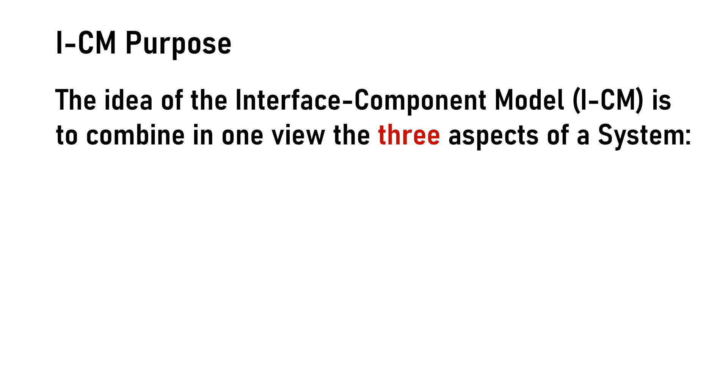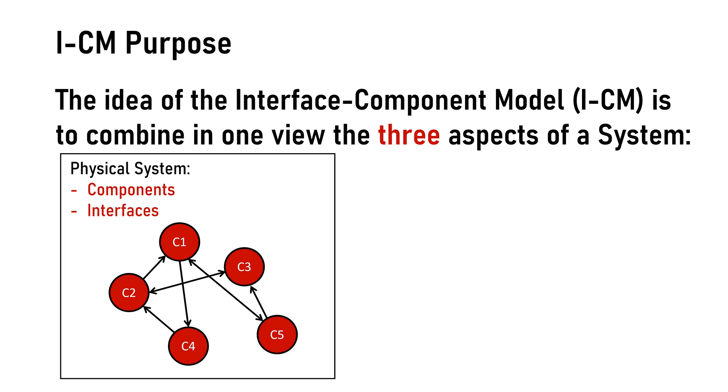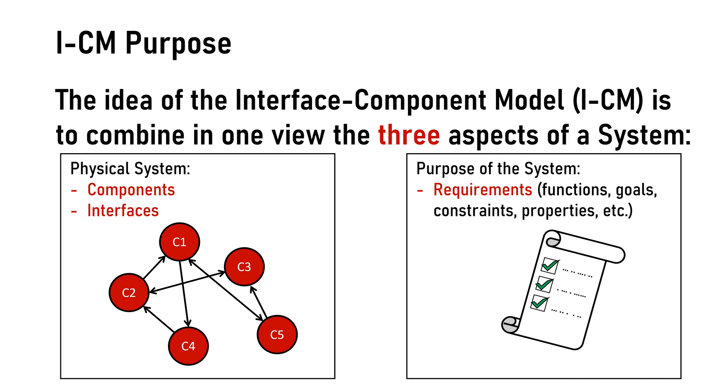The idea of ICM is to combine in one consolidated view these three aspects of the system: the components and their interactions as a definition of the physical system, and the set of requirements as a purpose of the system. Important to consider is that the requirements can be quite a wide range of entities like functions, features, goals, constraints, properties, etc.